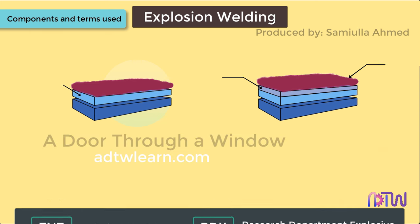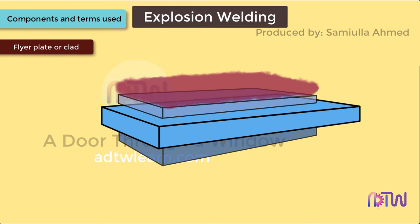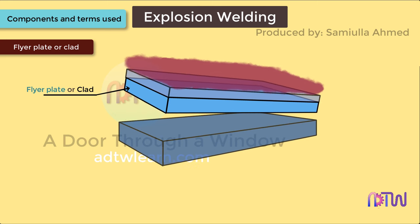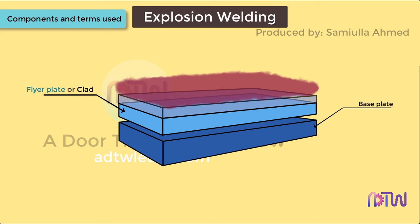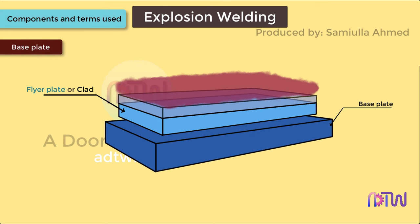Flyer plate or clad: the flyer plate, also referred to as clad, is the metal that is going to be welded with the base plate. It is placed at an angle or parallel to the base plate and is lighter in density with lower tensile yield strength than the base plate.